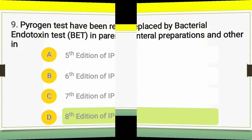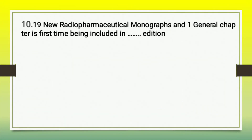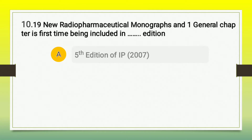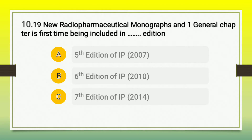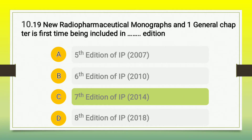Question number 10: 19 new radiopharmaceutical monographs and one general chapter were for the first time introduced in which edition? Options are A) fifth edition of IP (2007), B) sixth edition of IP (2010), C) seventh edition of IP (2014), D) eighth edition of IP (2018). The right answer is option C — in the seventh edition of IP, 19 new radiopharmaceutical monographs and one general chapter were first introduced.